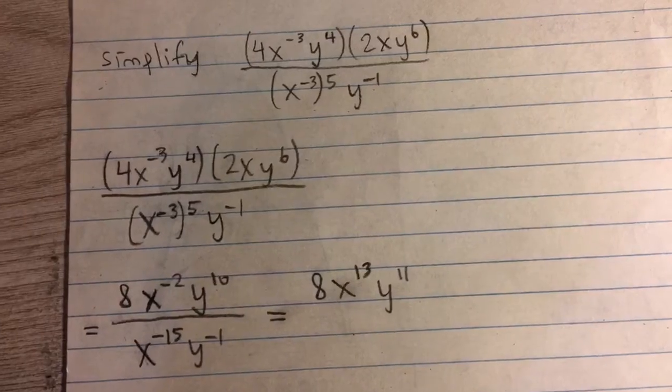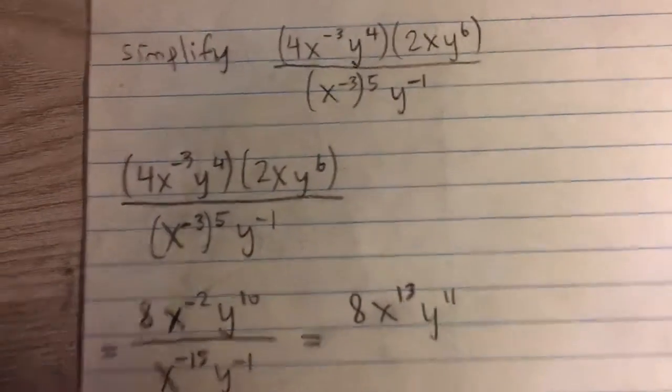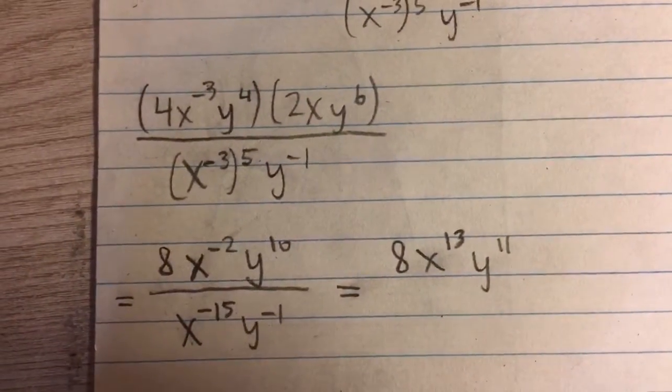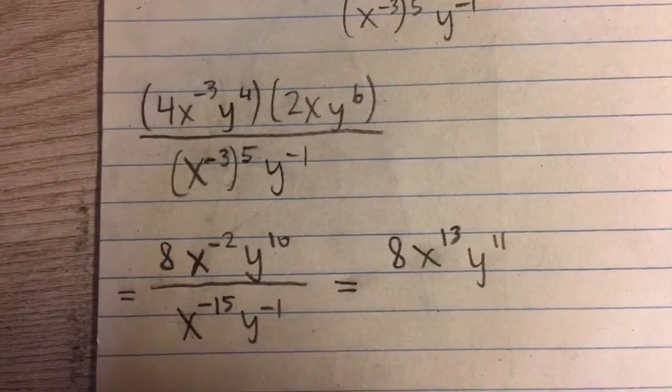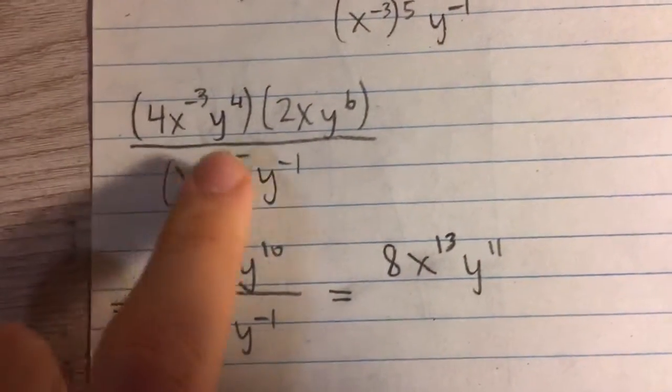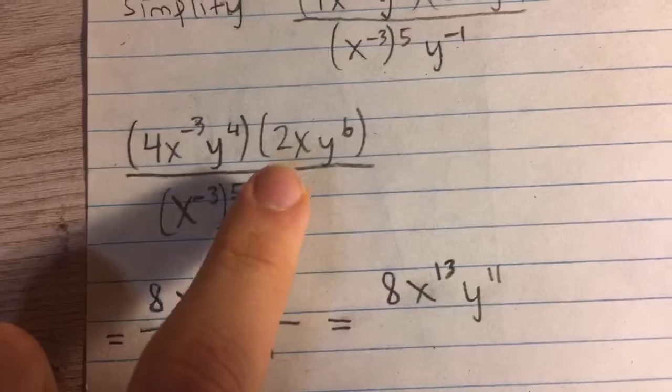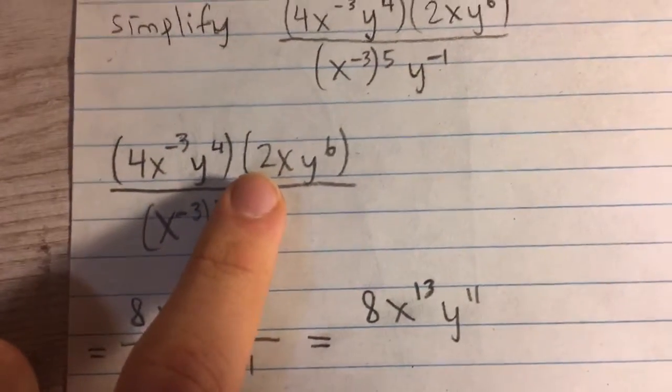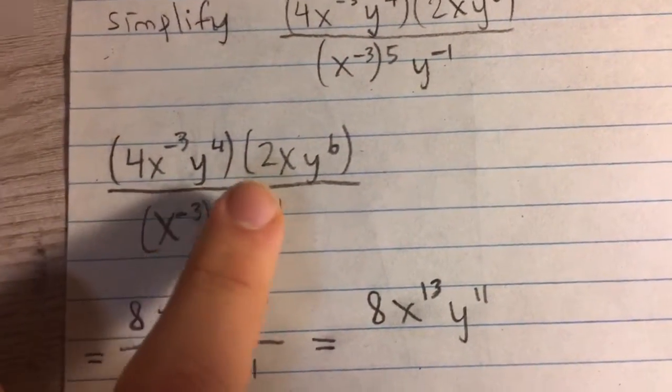To simplify this, first let's look at the top, the numerator. Since we have all these things multiplied by each other, we can look at the coefficients first, then look at each variable one by one.